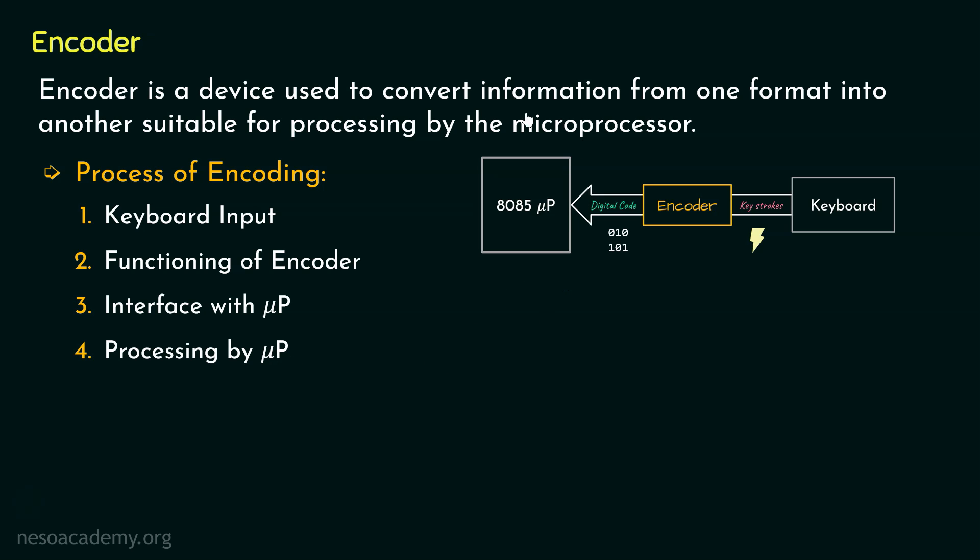For example, the microprocessor can interpret the key press as a character input and perform tasks such as displaying the character on screen, storing it in the memory, or even executing a specific command based on the key pressed. And this action can be termed as the response from the microprocessor.